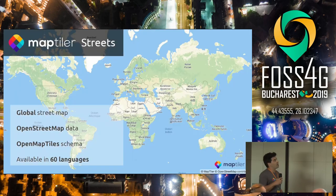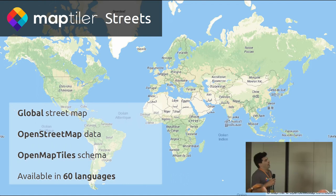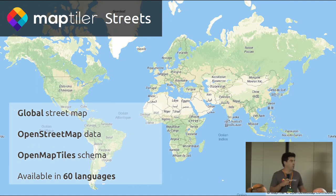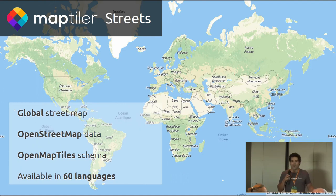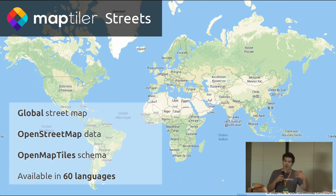Let us start with MapTiler Street, which is available on MapTiler Cloud by default. This is a global street map based on the OpenStreetMap planet that we update weekly and render using our very own OpenMapTiles cartographic schema. This map is available in more than 60 languages thanks to the data attributes from OSM, making it possible for users to create very local maps using local languages worldwide.